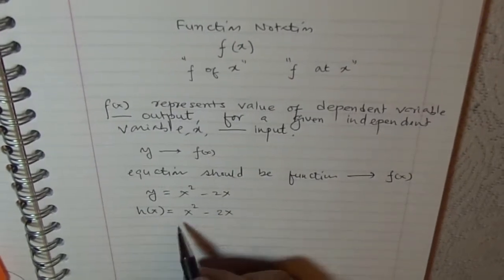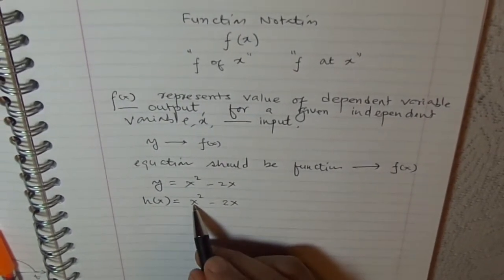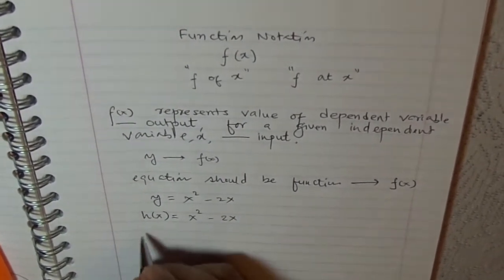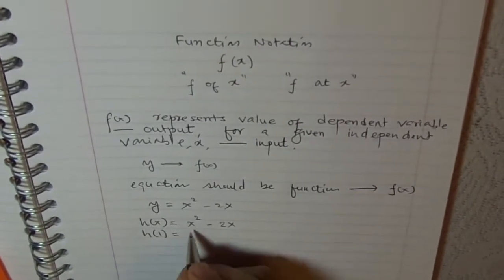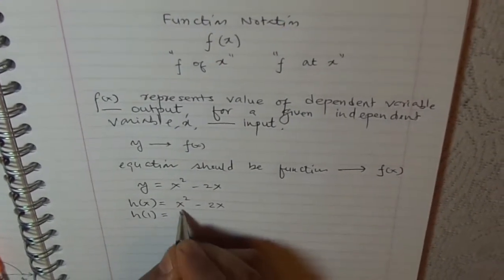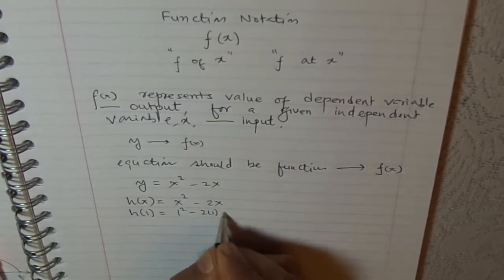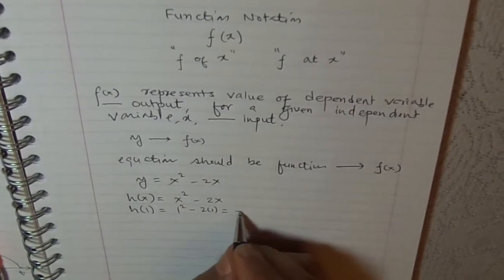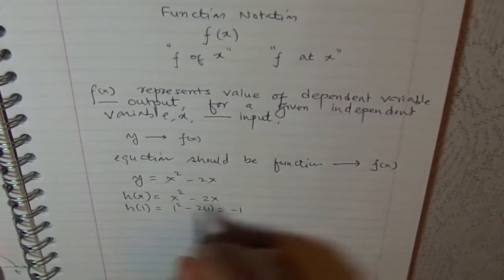Now, for different values of x we can always calculate h(x). For example, h of 1 is 1 squared minus 2 times 1, which is 1 minus 2, minus 1.